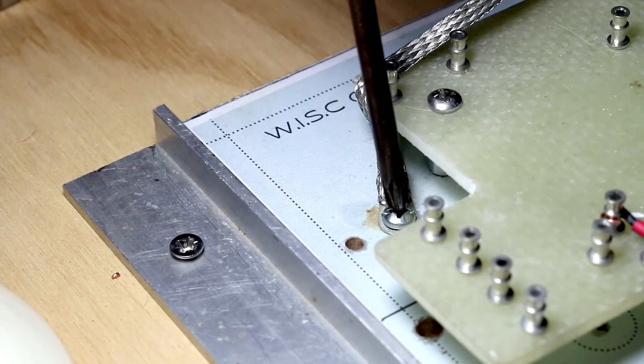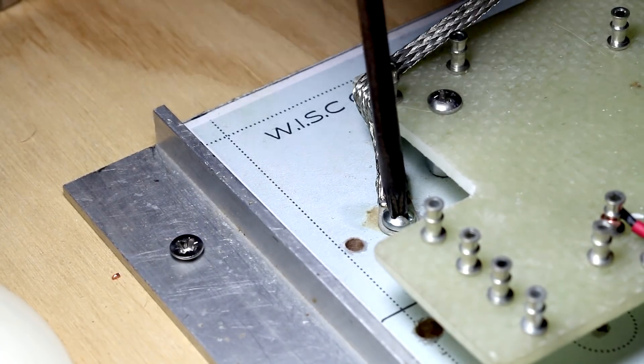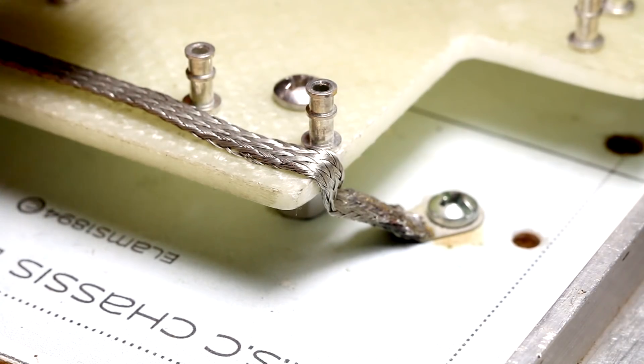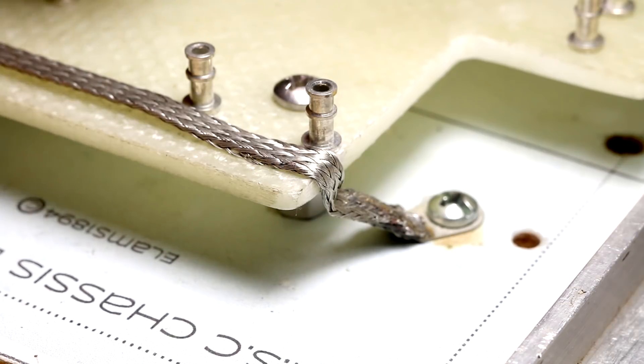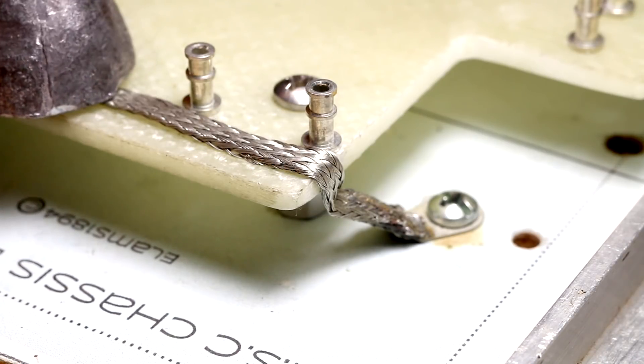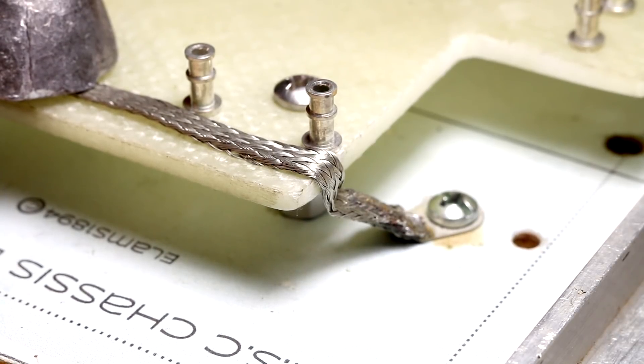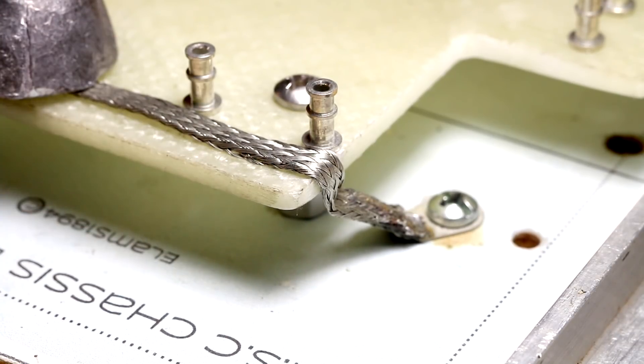Once I've got it in the right position, I'm just going to tighten up that screw again. I've got myself a lead weight that I've made out of a fishing sinker and I'm going to just use that to weigh the braid down so I can solder it to my turrets.